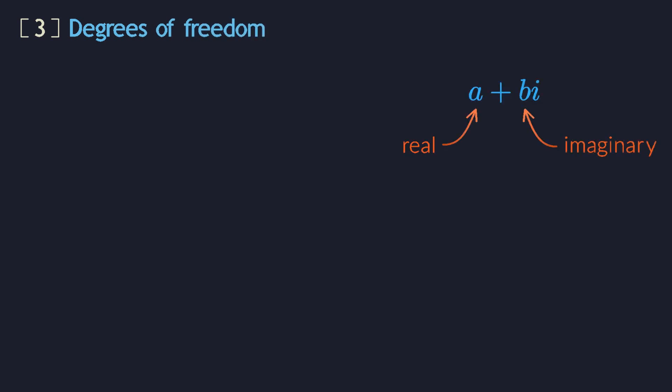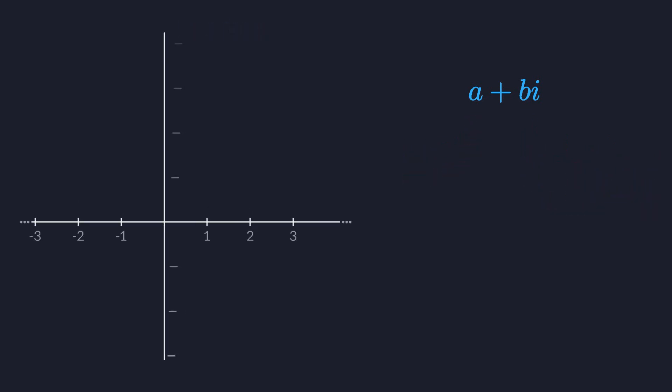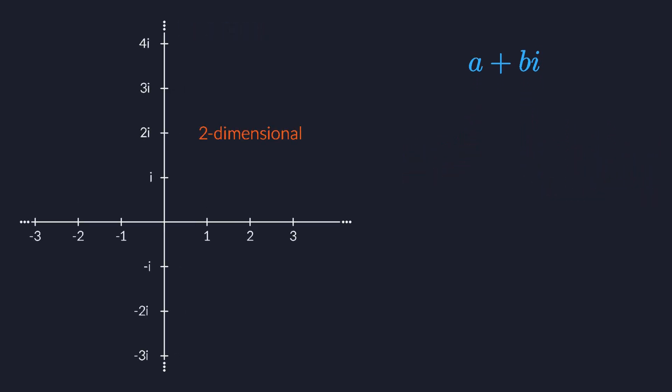Each complex number has two parts — real and imaginary — making the complex numbers a two-dimensional number system. When represented as 2x2 matrices, we have four values in our matrix. But two of them are the same, and two are always each other's opposite. That places two constraints on those four numbers, leaving us with only two independent values, a and b. So this group of matrices is still two-dimensional, just like the complex numbers themselves. The word dimension means degree of freedom — there are only two numbers we can freely choose.